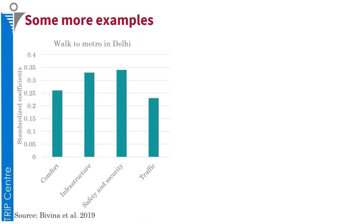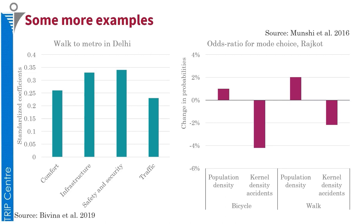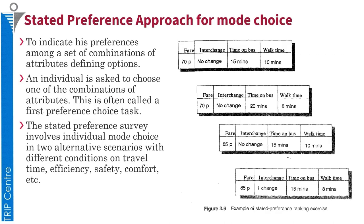The first example is from Delhi, where the choice of walking to metro is analyzed. Variables including comfort level, infrastructure, safety, security, and traffic are found to have significant impact on the choice of walking to metro. In the second example from Rajkot, the choice of bicycling increases with increasing population density. The choice of walking and bicycling both reduce if the kernel density of accidents increases in that area.